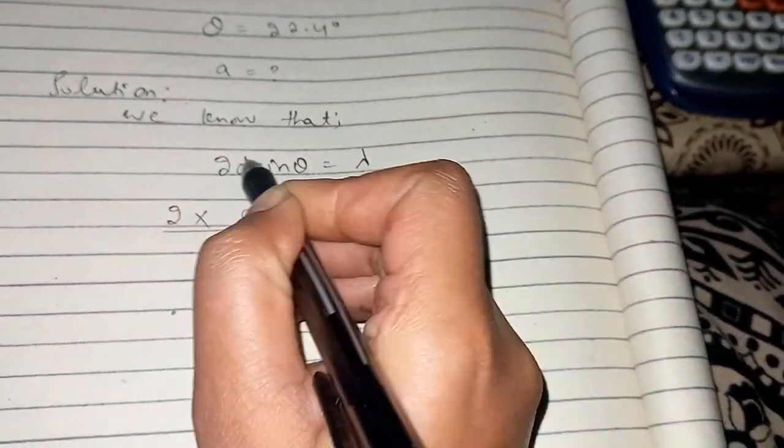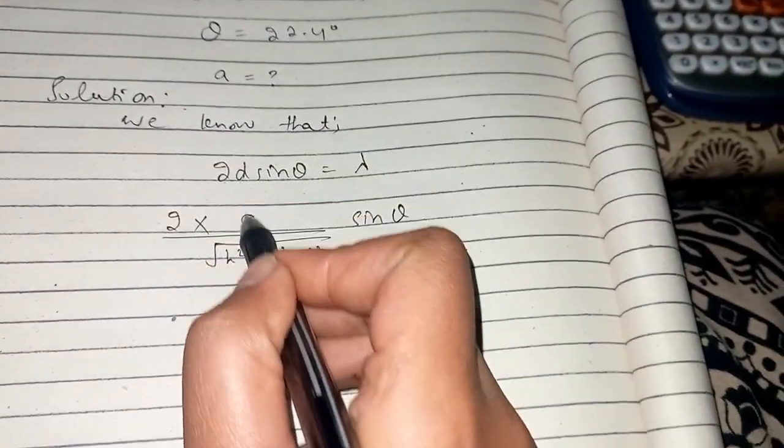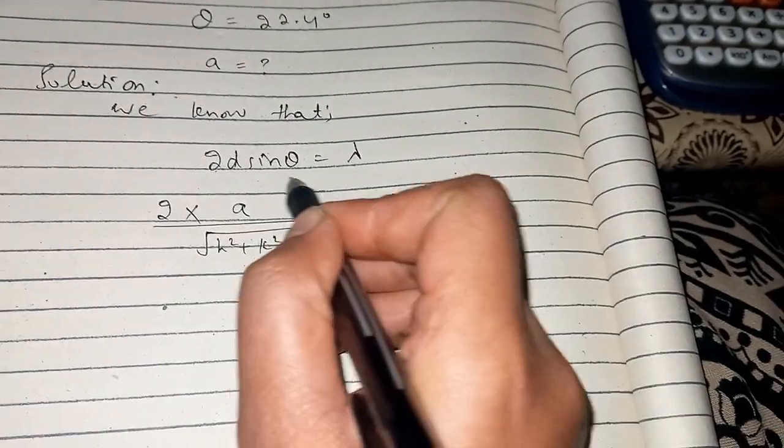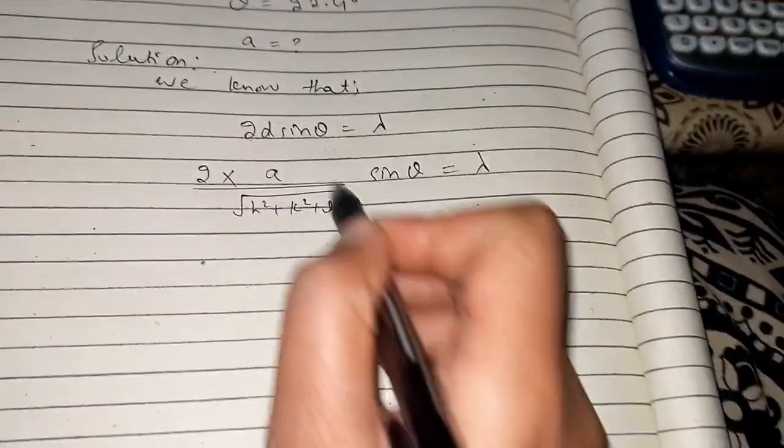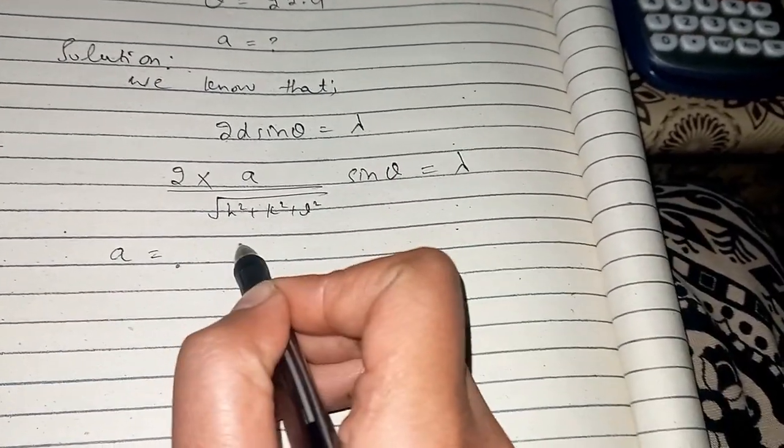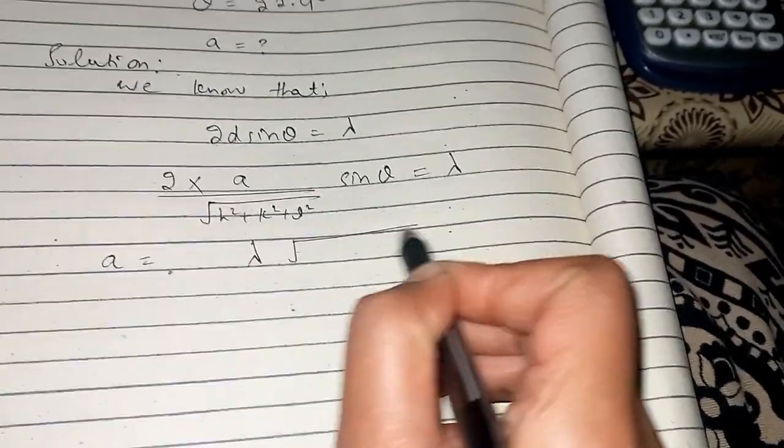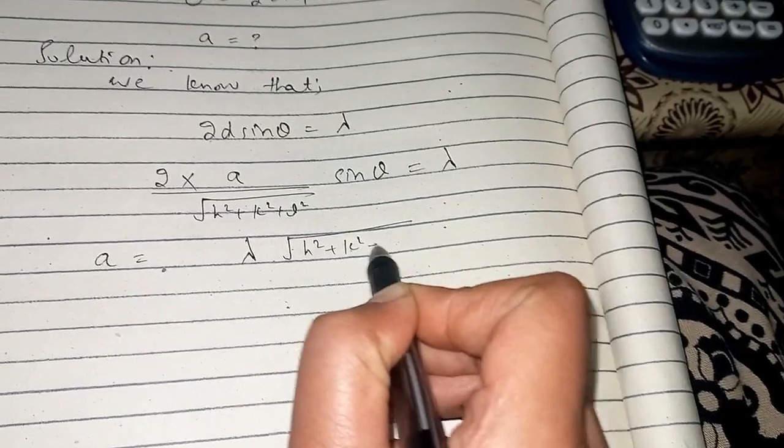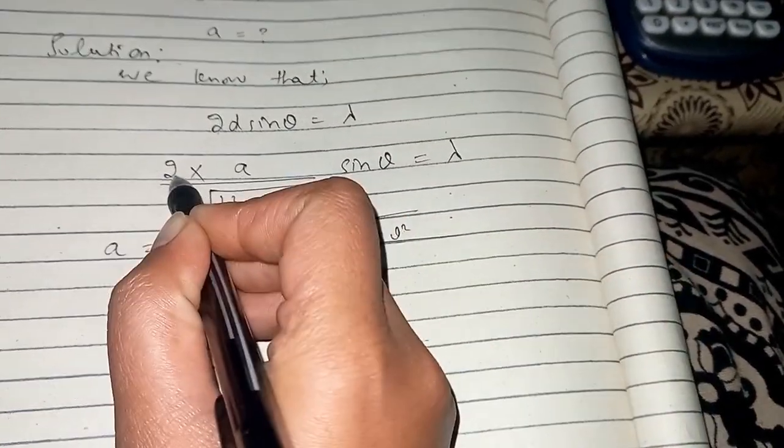This gives us 2d sin theta equals lambda. So we need to find a. Rearranging, a equals lambda times the square root of h² + k² + l² divided by 2 sin theta.